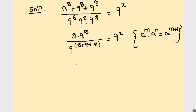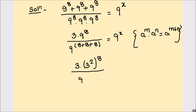Now in the numerator we can write 9 raised to power 8 in terms of 3. So 9 can be written as 3 squared, raised to power 8, divided by 9 raised to power 8 plus 8 is 16, and 16 plus 8 is 24, equals 9 raised to power x.